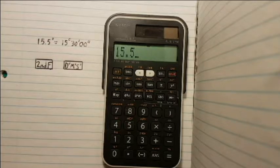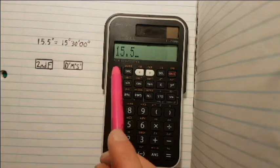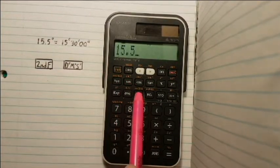Here is an example. If we have 15.5 degrees and want to convert to degrees, minutes, seconds, we simply press the Second Function key followed by the DMS key.